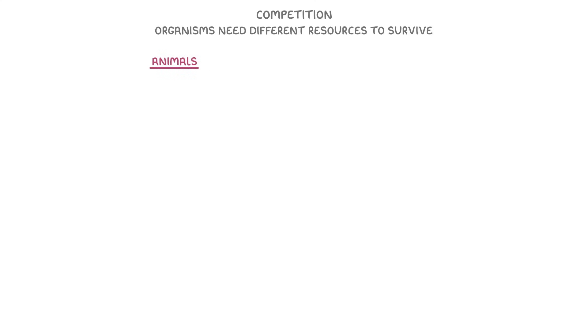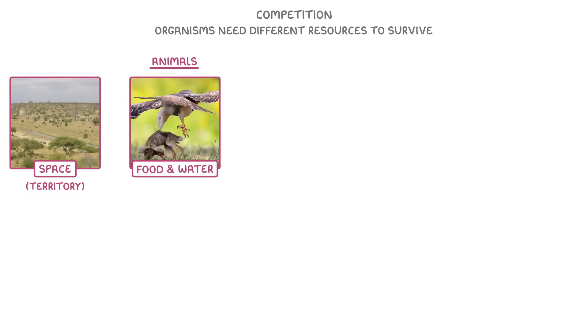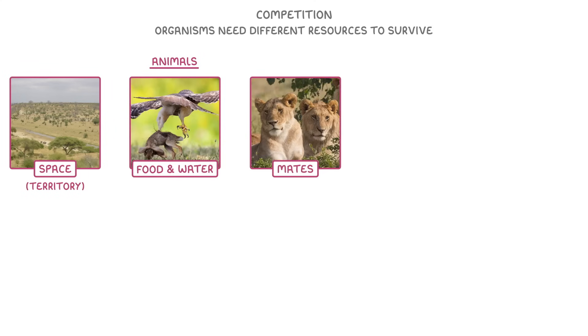One of the most important processes in an ecosystem is competition. If you think about any organism, it's going to need a range of different resources to survive. For animals, this usually includes things like space — which we can call territory — food, water, and also mates, so that they can reproduce.